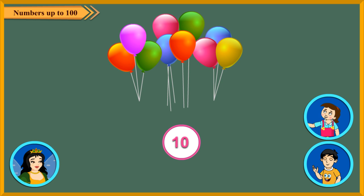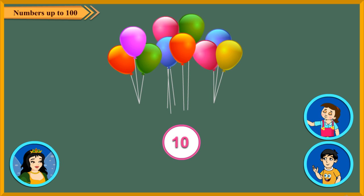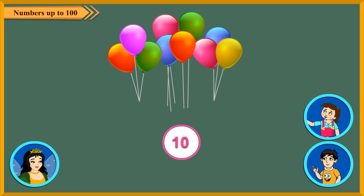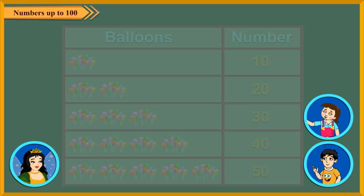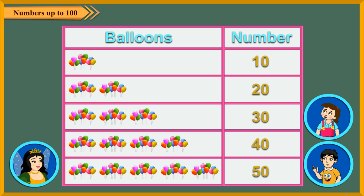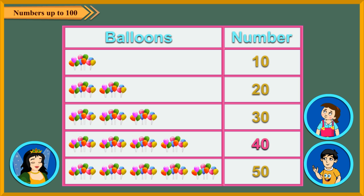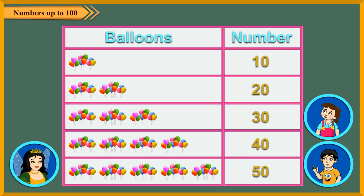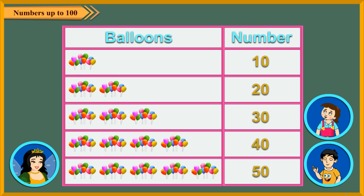Let us group these balloons in bunches of 10. Now, I can tell — this is 10, 20, 30, 40, 50. Very well done.